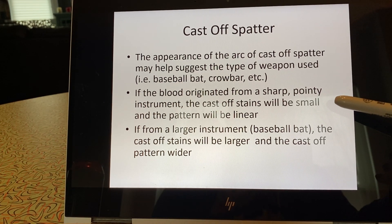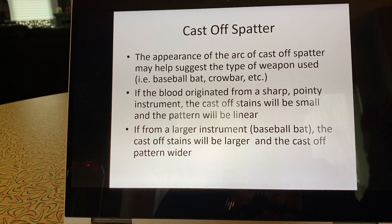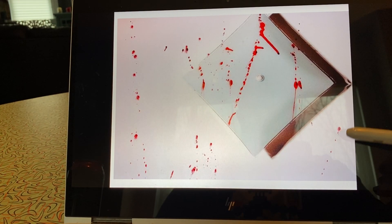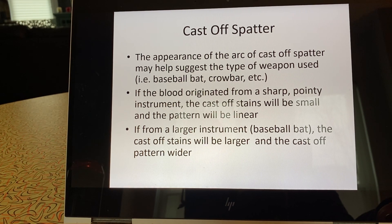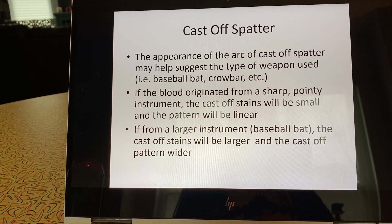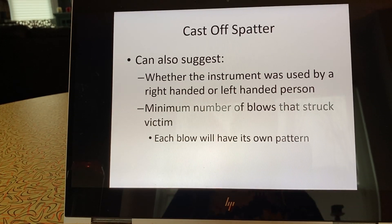If the cast off is from something sharp and pointy like a knife, you'll see small blood droplets in a very linear pattern — basically a straight line. If it's from something larger like a baseball bat, piece of wood, or someone's fists, the stains themselves are going to be larger and the cast off pattern will be much wider and thicker rather than a straight line.